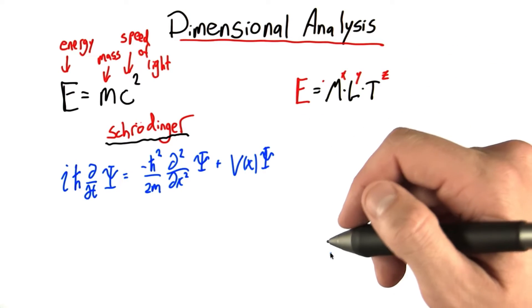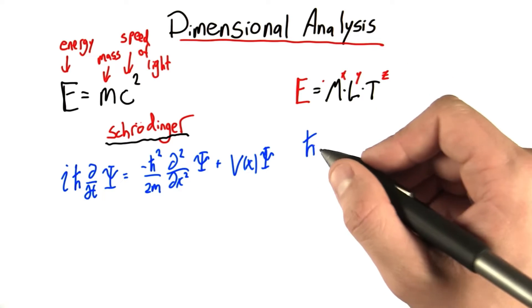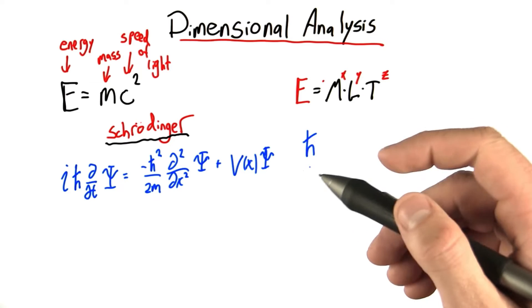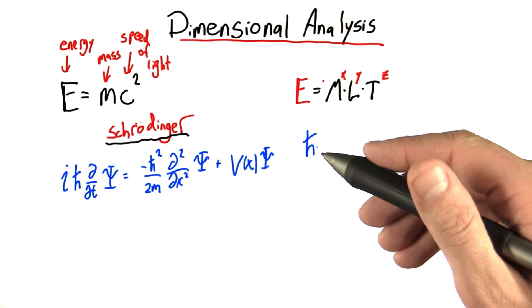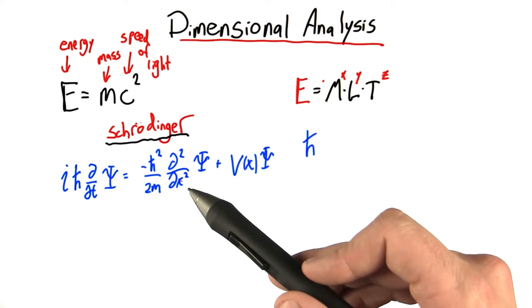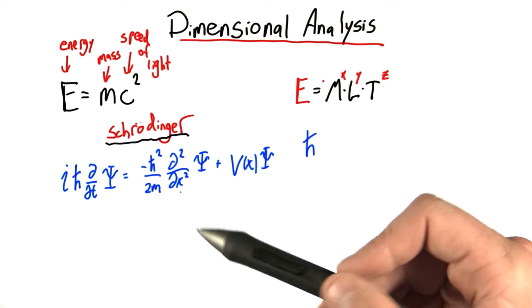But what I really want you to do, and what I want you to solve for this problem, I want you to tell me the units of this number h bar. H bar is a number that shows up in quantum mechanics, which is a fascinating field of physics, all the time. Even if you have no idea what some of these symbols mean, there's actually still a lot you can learn about this equation.